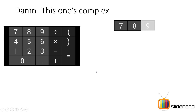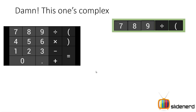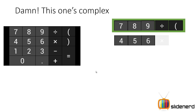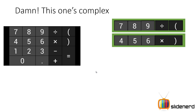So here I have my 7, 8, 9, divide by, and this left bracket. Now they are inside this horizontal linear layout, which is our green box. And then we have 4, 5, 6, multiply, and the other closing bracket, which is inside another horizontal linear layout.